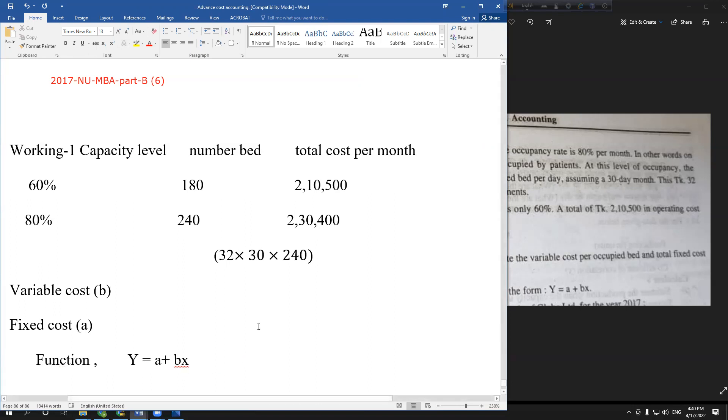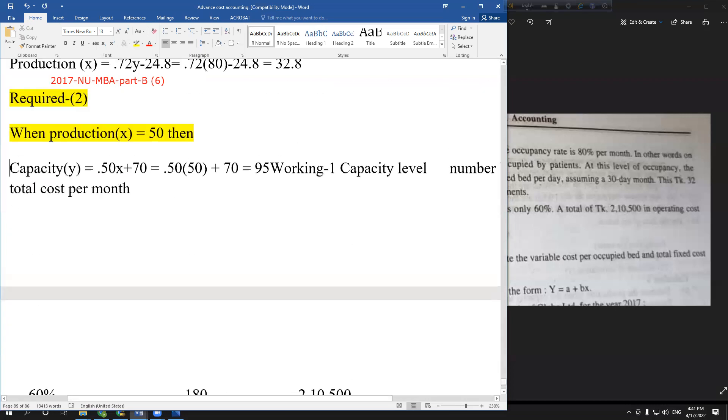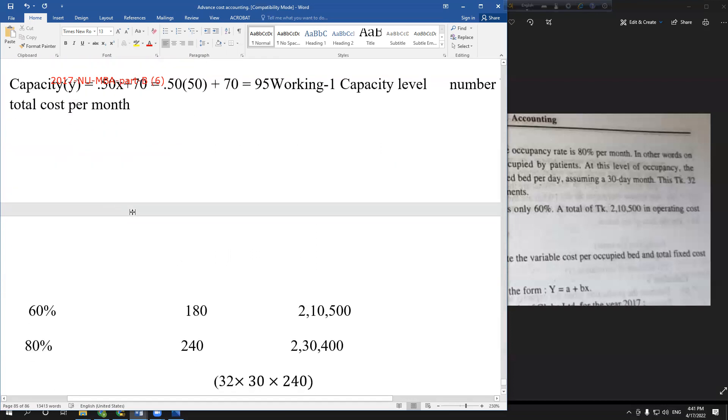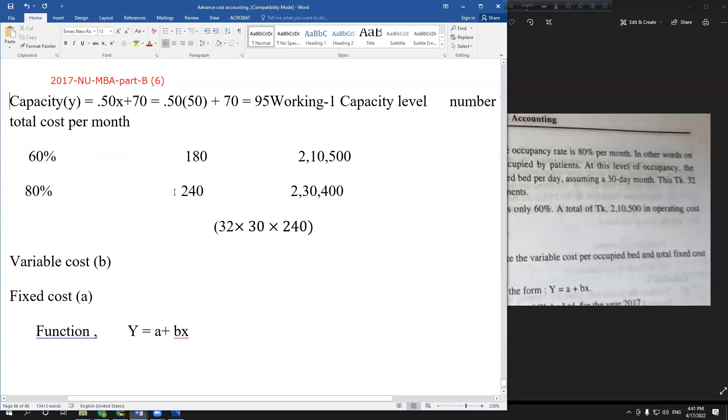Change in cost over change in beds - the change in units. We're looking at the change in taka over the change in units, which gives us the variable cost per bed.